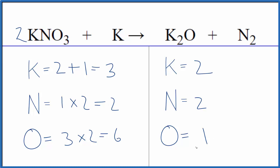Let's fix the oxygens. Six here in the reactants, only one in the products. Coefficient of six in front of the potassium oxide, one times six, that'll give us six. Now the oxygens are balanced.